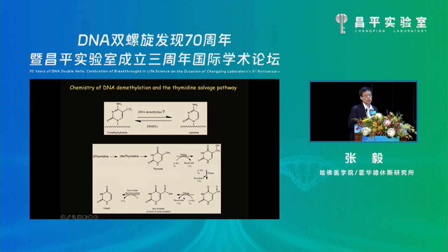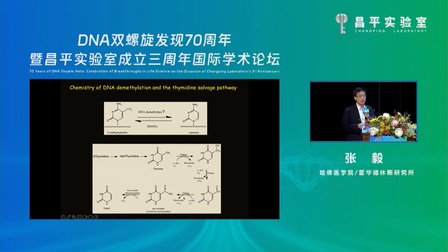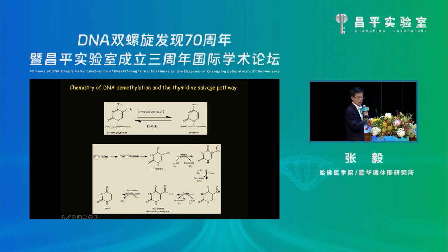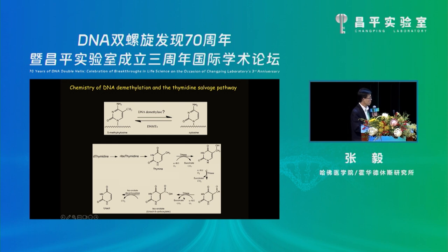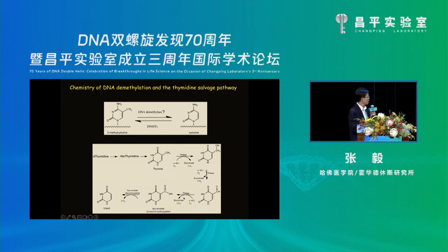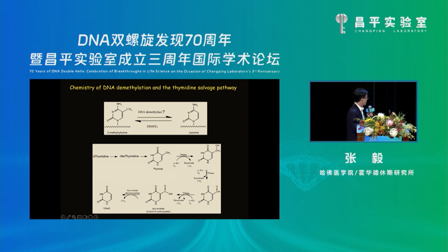That is the thymine salvage pathway in fungi and parasites. From thymine to uracil, it's required to remove this methyl group at the five position of this pyrimidine ring. This salvage pathway involves two enzymes: the thymine hydroxylase uses alpha-ketoglutarate as a cofactor — the same as the Jumongi family proteins — and through oxidation converts the methyl group to hydroxymethyl, formyl, and carboxyl. Then the isoorotate decarboxylase removes it.